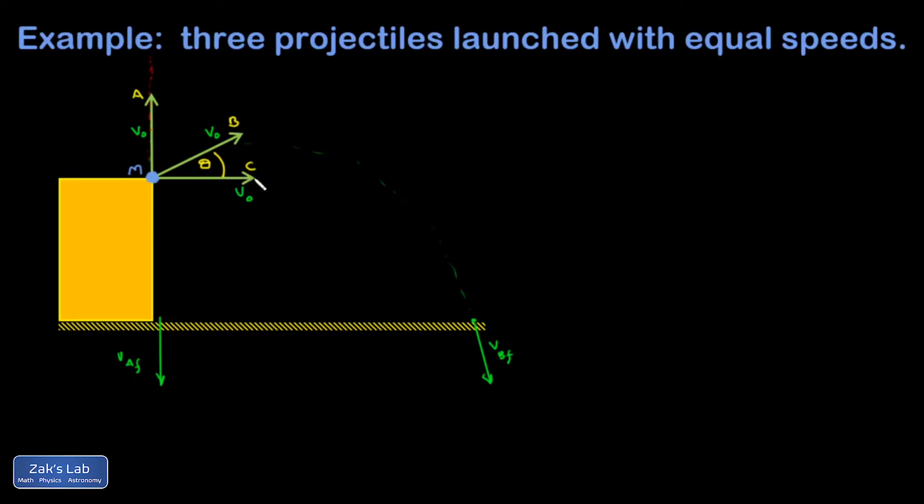And then projectile C is going to go off on a different parabolic trajectory. And that'll be VC final.